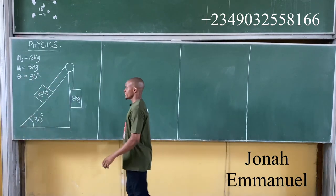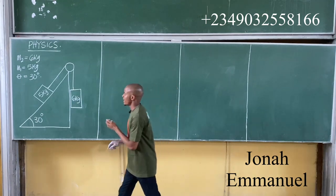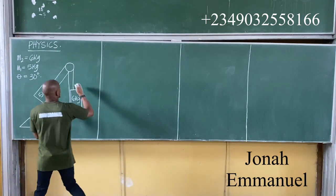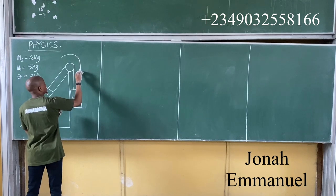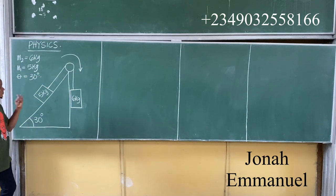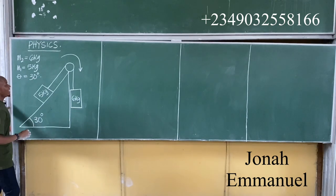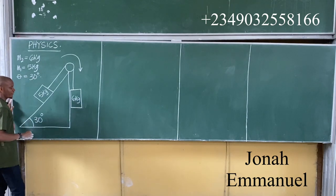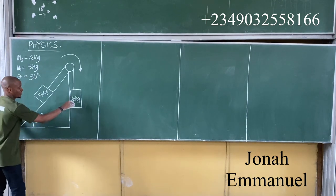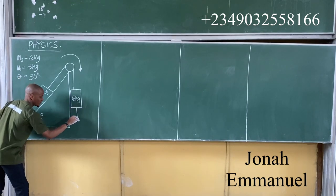Alright, let's get this done. So first of all, my direction of motion would be in accordance with the greater mass — this way. So, what's next? Let's get our free body diagram. For this one here, this one will come downward.